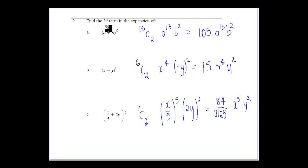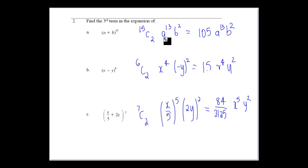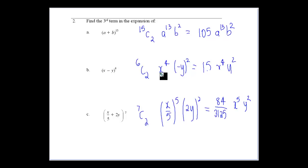Using the idea to find the third term of an expansion: the third term of (a + b) to the power of 15 would be 15C2, giving a to the power of 13 times b to the power of 2. From the calculator, 15C2 is 105, so it's 105 a to the power of 13 b squared. For (x − y) to the power of 6, the third term is 6C2, giving x to the power of 4 times (−y) squared, and 6C2 is 15.